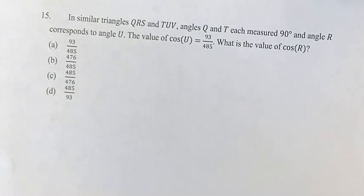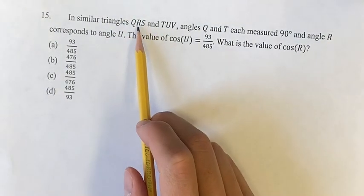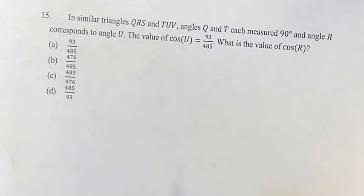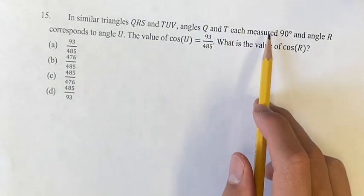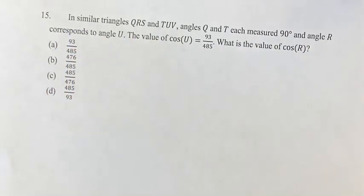Hello and welcome back to another video. In this problem we have triangles QRS and TUV. Angles Q and T each measure 90 degrees and angle R corresponds to angle U.